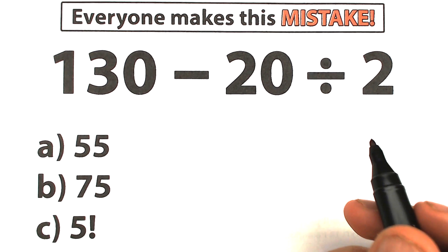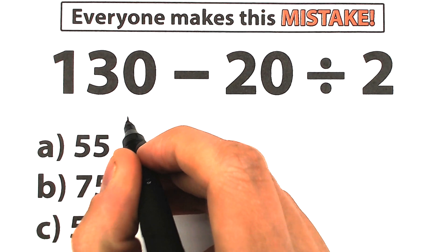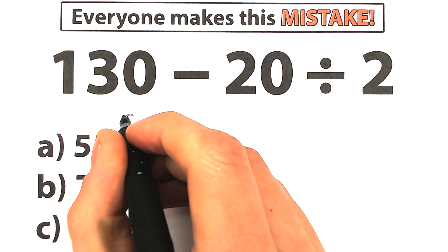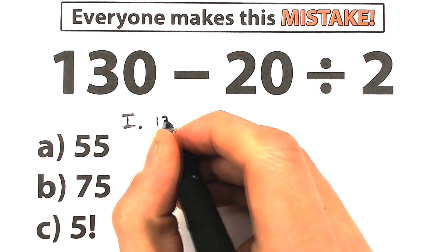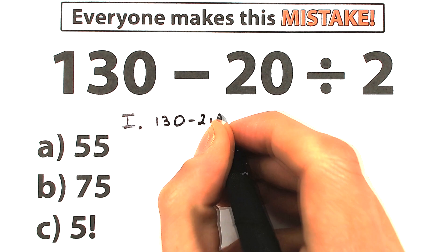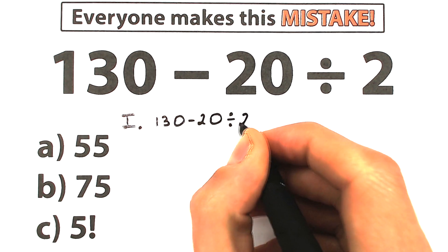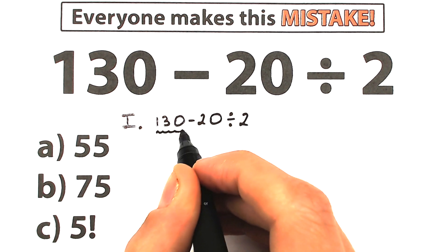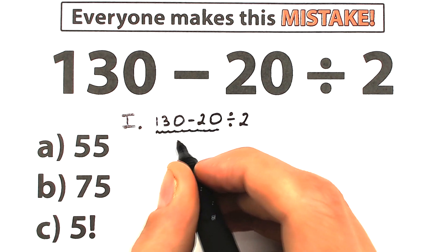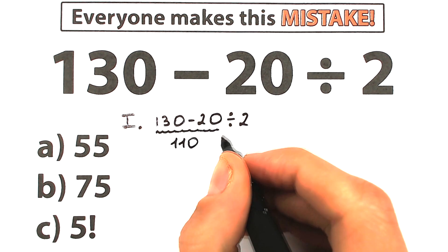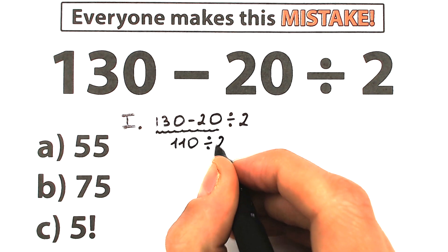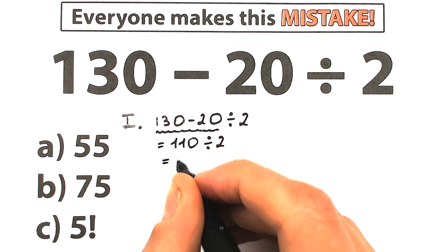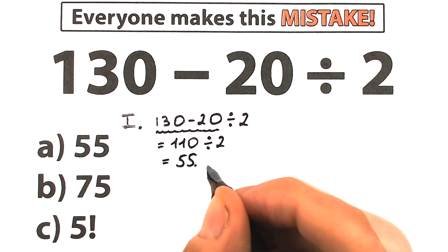So there are two types of people. First type of people solve this question randomly, solve this question like that. They say, okay, we have 130 minus 20 divided by 2. Okay, let's subtract it first. Right here we have 130 minus 20 equal to 110. We have this division by 2, so it looks like the correct answer is 55. So first type of students solve this question like that.